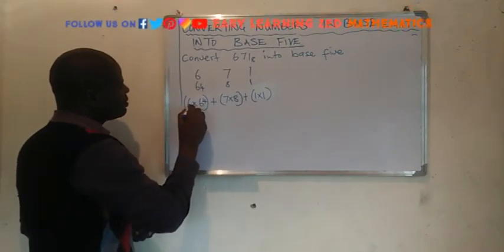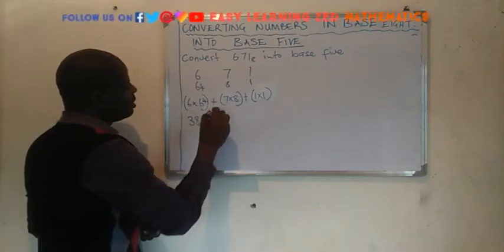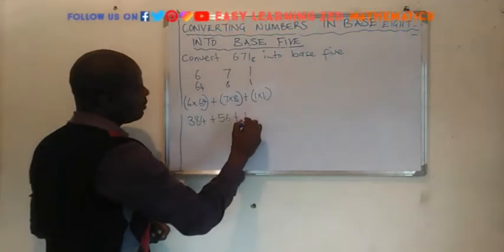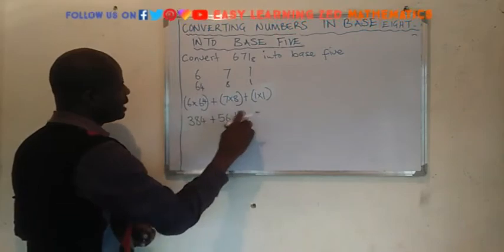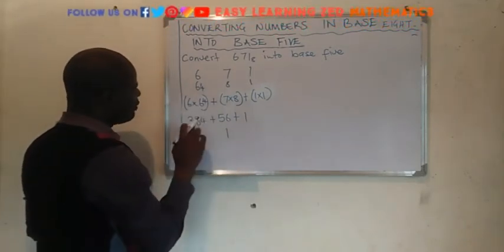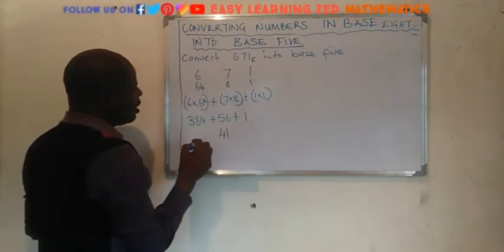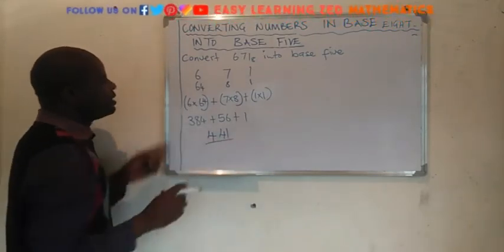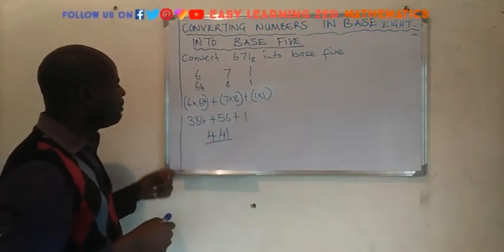So, 6 by 64 will give us 384, plus 7 by 8 will give us 56, then plus 1. We add these together: 1 plus 6 is 7 — wait, 384 plus 56 plus 1. That gives us 441. So 671 in base 8 is 441 in base 10.